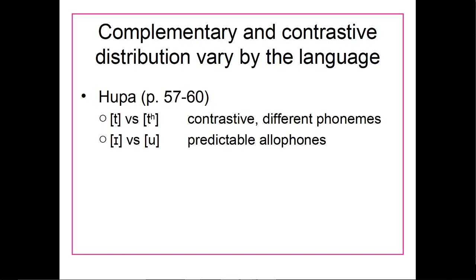This is discussed on pages 57 to 60 of your books. In the language Hoopa, the unaspirated T and aspirated T are contrastive phonemes — different phonemes that signal different words — whereas in English, those two would be allophones of the same underlying phoneme. Conversely, in Hoopa the I vowel and OO vowel are predictable allophones of the same phoneme, whereas in English they are two different phonemes — two distinct vowels.